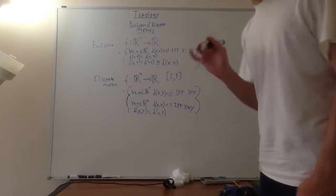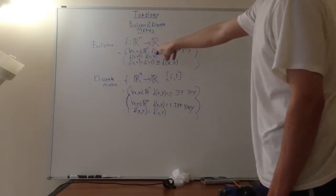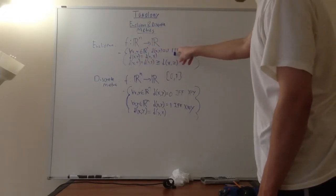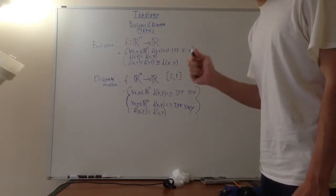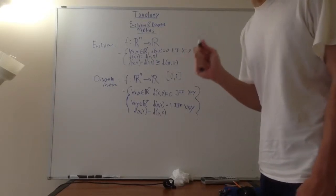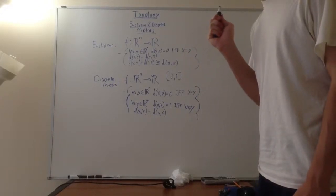Now, what are some properties of the Euclidean metric? Well, for every x and y in R^n, the distance between x and y is zero if and only if x is equal to y. And that makes sense, of course. It's kind of intuitive, because the distance between any point and itself is just equal to zero, because you haven't really moved anywhere. And that's an important axiom to have.